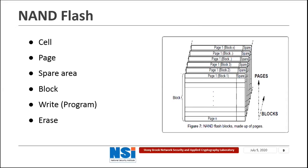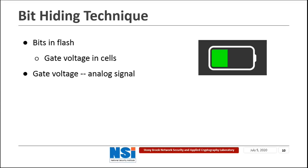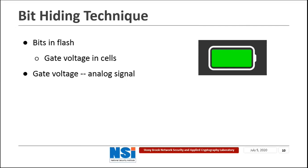Before going into more details, let's see what NAND Flash is. NAND Flash is a storage media consisting of a range of NAND Flash cells. Those cells are grouped into pages and pages are grouped into several blocks. A page is the smallest unit for a write operation in NAND Flash and a block is the smallest unit for an erase operation. Different digital bits are stored in NAND Flash cells by changing the gate voltages of each cell. In a write operation, the NAND Flash cells are charged and the gate voltages increase.